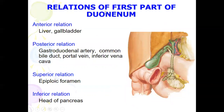The anterior relations of the first part of the duodenum include the liver and gallbladder. Posteriorly we have the gastroduodenal artery, the common bile duct, and the portal vein. Superiorly it is related with the epiploic foramen. Inferiorly it is related with the head of the pancreas.